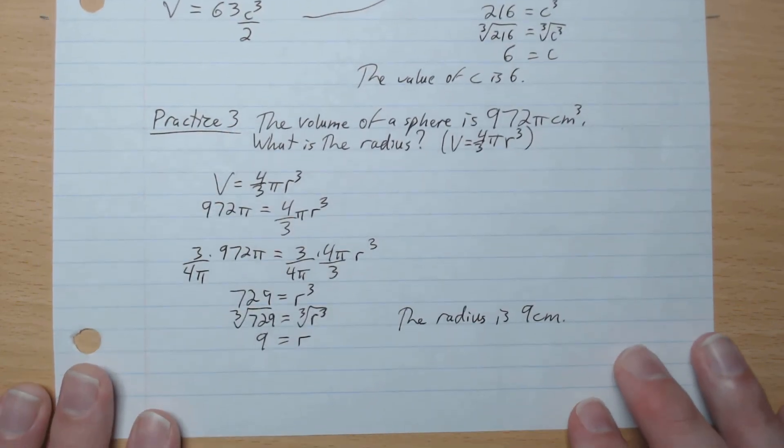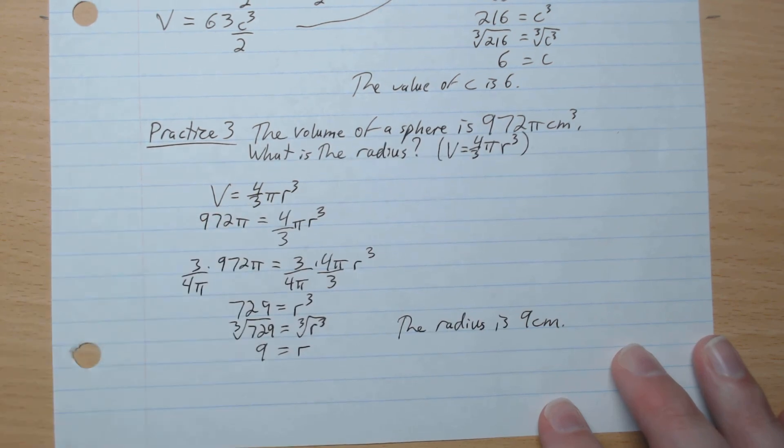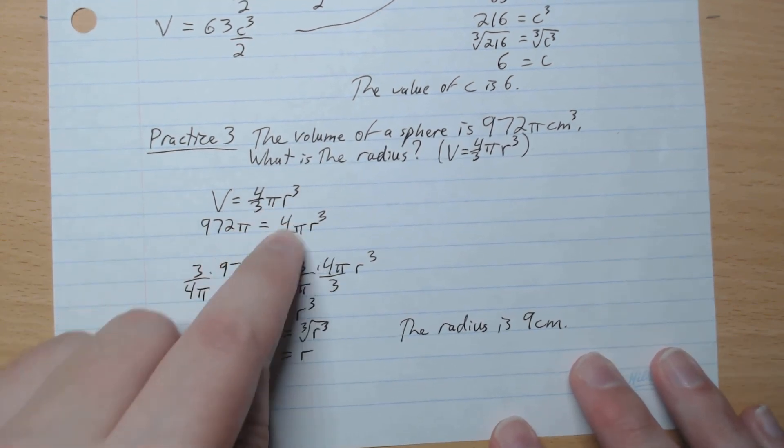Okay, we're back. So volume, 4 over 3π r³. Volume, plug it in, 972π. We want to get rid of this 4π over 3.